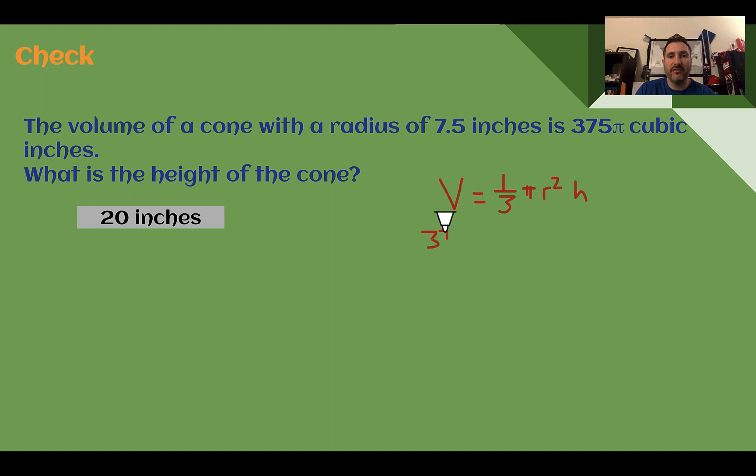Our volume was 375π. We know that there's one third. Our radius was 7.5.